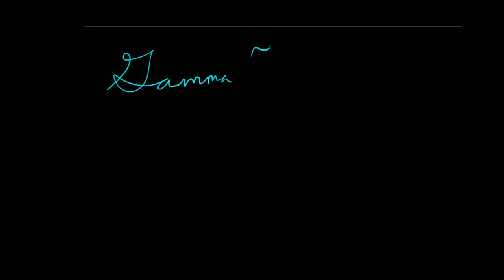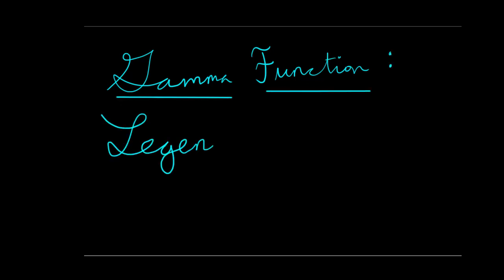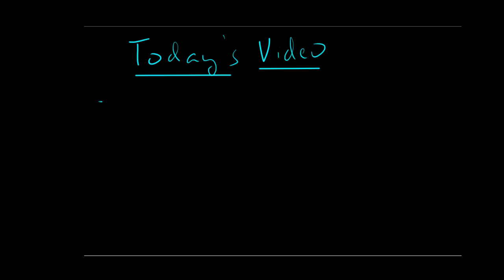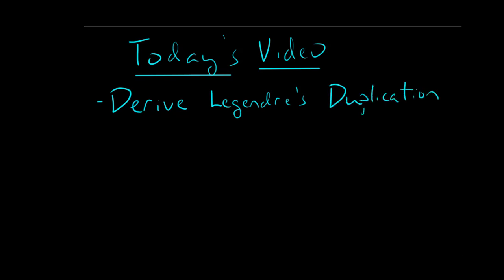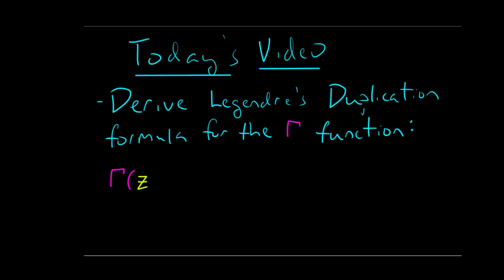Hello everyone and welcome to today's video lecture on the gamma function. Today I'm going to be discussing and deriving the Legendre duplication formula. This is a formula that relates gamma of z to gamma of 2z. Just to state it now so you all see where we're going: this is a formula that says that gamma of z times gamma of z plus one half equals two to the one minus two z times the square root of pi times gamma of two z.